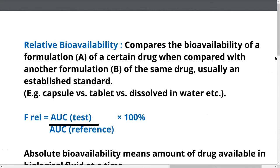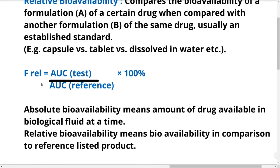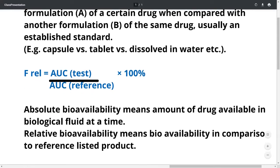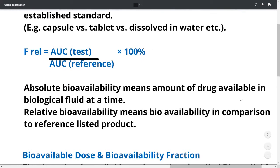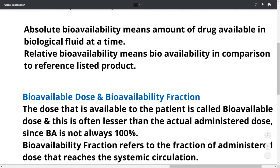Relative bioavailability compares the bioavailability of a formulation of a given drug against another formulation of the same drug, which is usually an established standard — for example, capsule vs. tablet vs. dissolved in water. Relative bioavailability is calculated as AUC(test) divided by AUC(reference) multiplied by 100%. Absolute bioavailability means the amount of drug available in biological fluid at a given time, whereas relative bioavailability means bioavailability in comparison to a reference listed product.